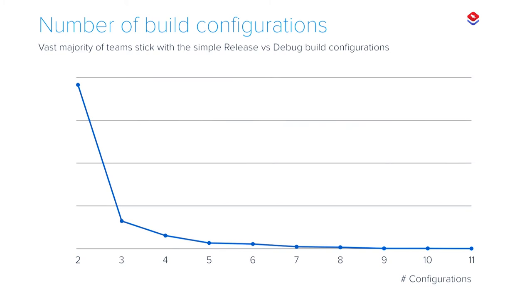When you create your project you have two configurations — release and debug — and for most people that's enough. But some people like to add as many configurations as they have environments: one for App Store deployment, one for ad hoc, and so on. We've even seen teams with 11 configurations.